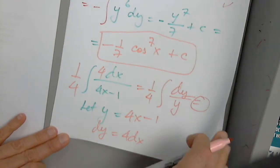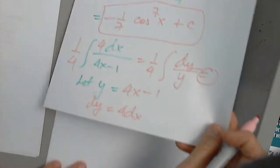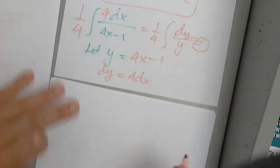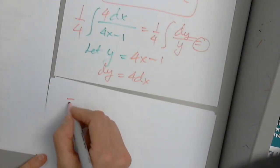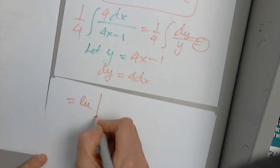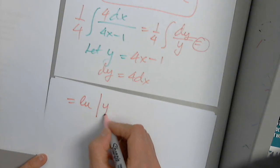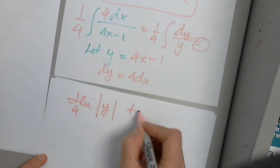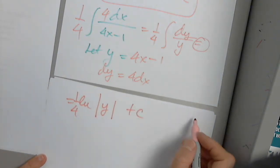Which function's derivative is 1 over y? So this is the natural log of the absolute value of y, with 1/4 in front, plus a constant C. Excellent.